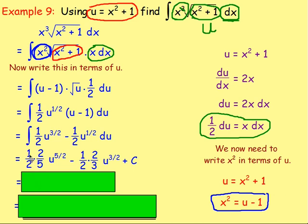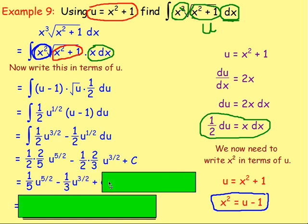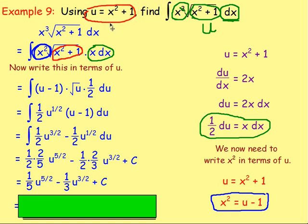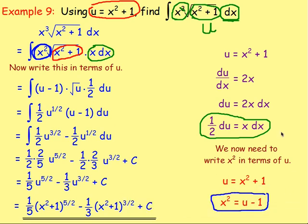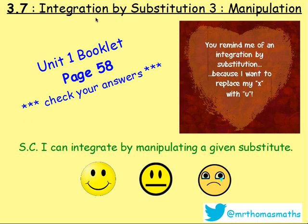1 times 2 over 2 times 5 gives 2 over 10, which simplifies to one fifth. So I've got one fifth of u to the power of 5 over 2. Take away: 1 times 2 and 2 times 3 gives 2 sixths, which simplifies to one third, and u to the power of 3 over 2, plus c. Then the final stage: swap u with x squared plus 1, giving one fifth of x squared plus 1 to the power of 5 over 2, take away one third of x squared plus 1 to the power of 3 over 2, plus c. Try these questions in the workbook on page 58 — integration by substitution where you manipulate your substitution to get what you desire. Good luck, have fun. Bye.